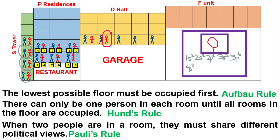We continue with 4s2, and now we're on the third floor of the D Hall. Count the number of people following the Pauli exclusion principle: 1, 2, 3, 4, 5, 6, 7. The last notation is 3d7. So the full electron configuration ID for this person is 1s2 2s2 2p6 3s2 3p6 4s2 3d7. This, everyone, is the electron configuration. Each person represents an electron, and each electron, like humans, is unique — they have their own characteristics, values, and attributes.